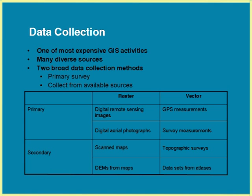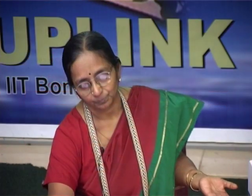If you go for raster, remote sensing is the best source. For vector, what we now use is either a total station or a GPS geodetic receiver — you go and collect your locations, map the boundaries, and take the data readily in vector form. Data is possible from primary sources as well as secondary sources. The question is quality. If you depend on secondary sources, the certainty and accuracy may not be known to the users.